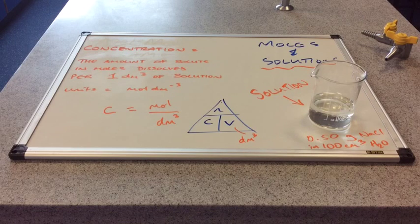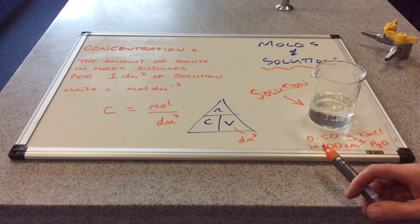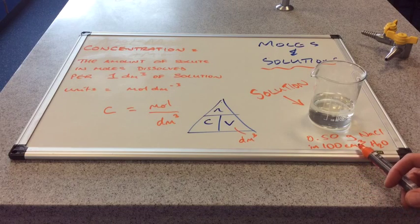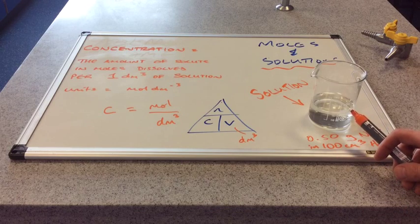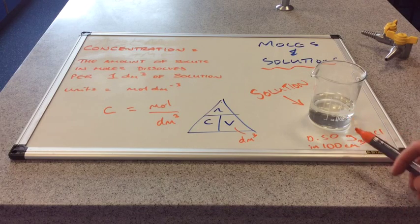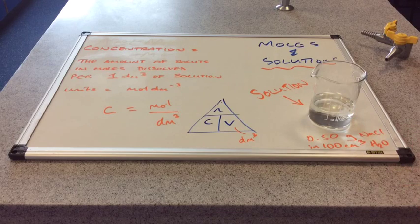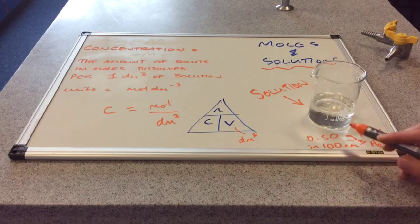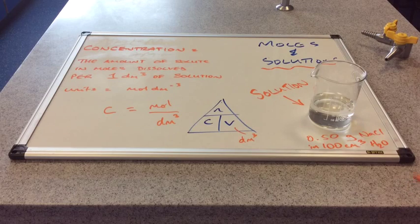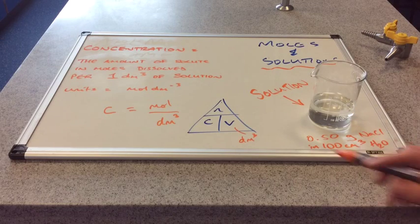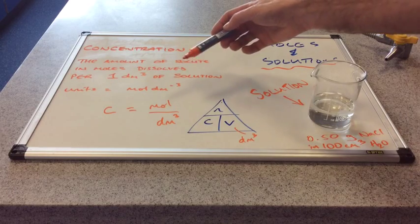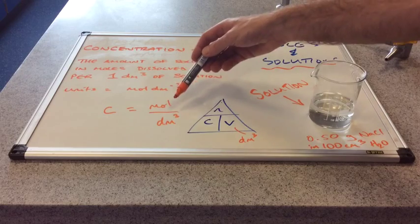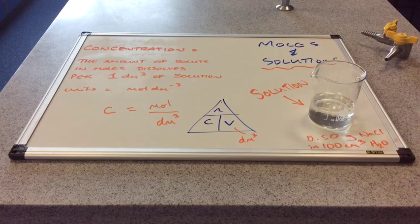The most important thing about this triangle is the volume term: it must be in decimetres cubed. That V term has to be in dm³. A common problem is that volume is normally expressed in cubic centimetres or millilitres — you can see millilitres on the beaker. Millilitres and centimetres cubed are the same thing, so 100 cm³ is 100 mL, but we can't use this unit in the triangle. Concentration is expressed in moles per dm³, so we have to convert the volume into dm³ before working out the concentration.